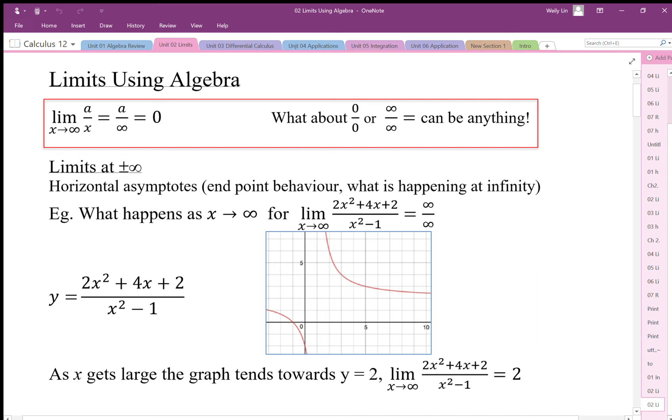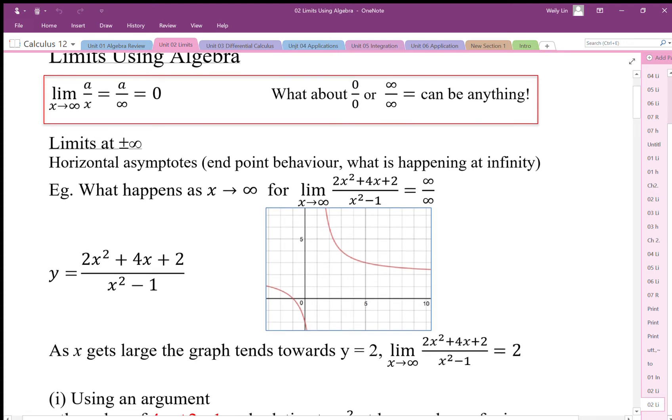We're going to start by looking at limits at infinity, seeing what happens to the graph as x goes to infinity. If we plug in our limit, we get infinity in the numerator and infinity in the denominator. If we take a look at the graph, it looks like it's heading towards a horizontal asymptote at y equals 2.